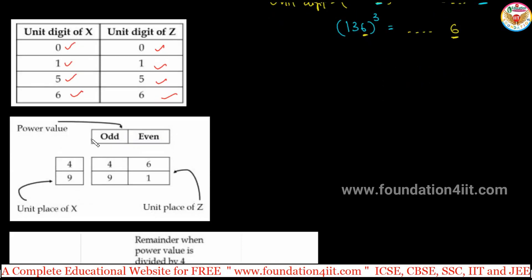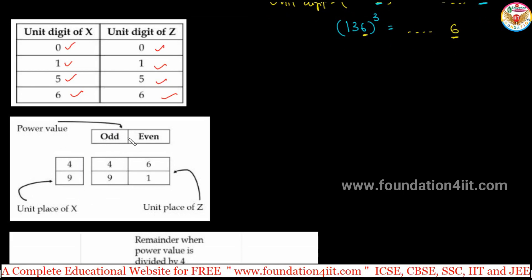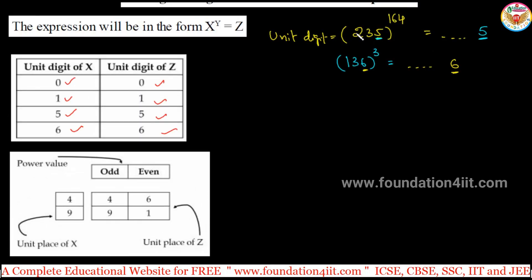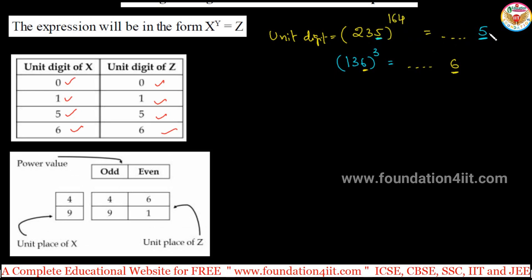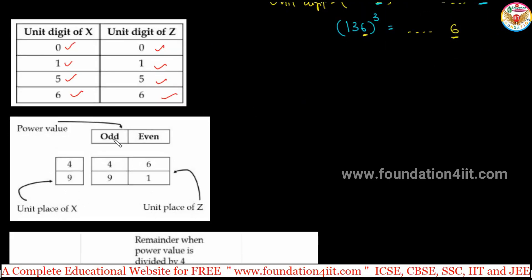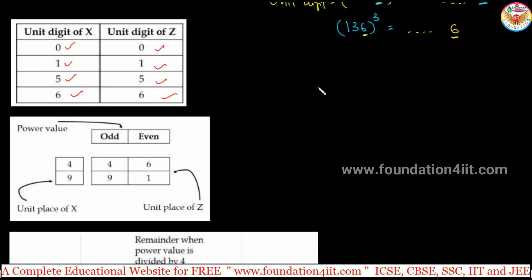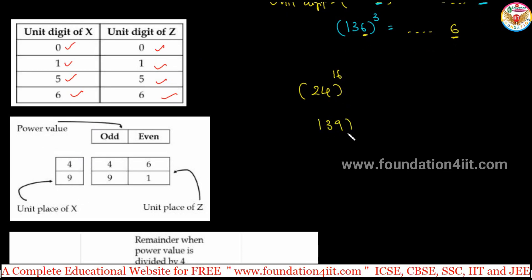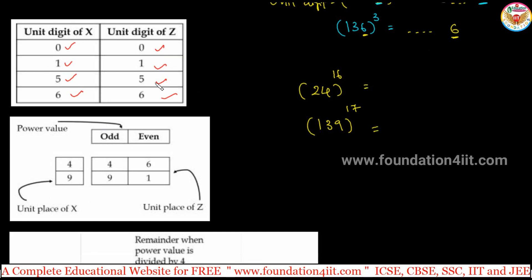The next set is if the unit digit is 4 or 9 — for 4 or 9, it depends on whether the power is odd or even. For 0, 1, 5, 6, any power gives the same unit digit — it does not change. But for 4 and 9, you need to remember this table. Let us take an example: 24 to the power 16, or 139 to the power 17.